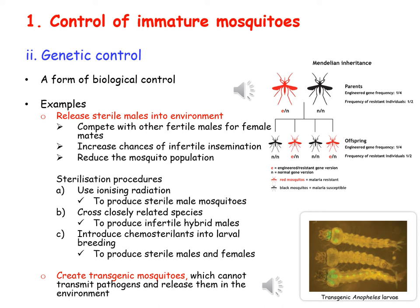Another use of genetic control is the production of transgenic mosquitoes that cannot transmit a specific disease. By releasing these transgenic mosquitoes into the environment, we hope that this characteristic will pass on to the whole population, so that the disease will not be able to be transmitted by the same species of mosquitoes.